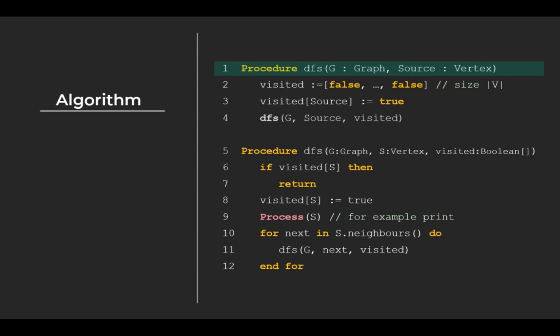The first procedure takes two inputs, the graph to traverse and the starting vertex. Again, source can be any node from the graph. We need some way to track of the vertices that have been visited. This can be in the shape of an array of boolean of size V, the number of vertices in the graph. False means the vertex has not been visited yet. And true means the vertex has been visited. We use an array, but we could have also used a set containing the visited vertices instead. We set the starting vertex as being visited. And then we can start the recursion using the second procedure.